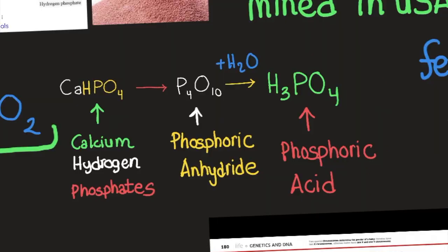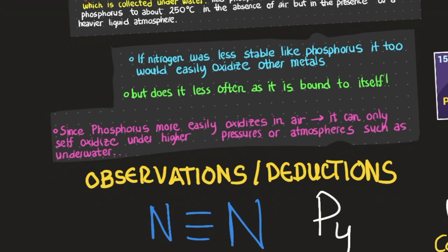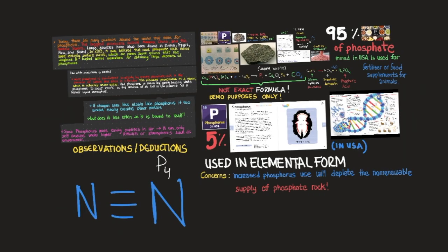This just shows the process that phosphorus undergoes in order to become phosphoric acid. If nitrogen was less stable like phosphorus, it too would oxidize other metals. Phosphorus doesn't stabilize like nitrogen because nitrogen has a very stable triple bond — if you separate it, you release a lot of energy. Phosphorus has less opportunity to form such stable triple bonds because of its heavier and denser structure. That's why even in its white phosphorus form P4, it doesn't stay stable — it needs to be formed underwater because it's more heavy and wants to bind in more ways that are less stable.